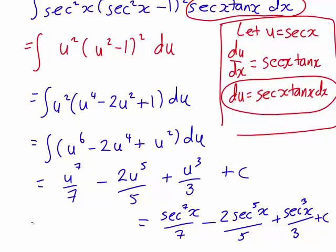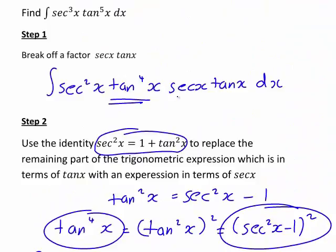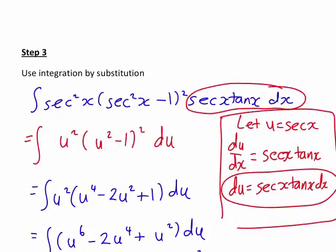Which was, in fact, what we were initially trying to work out. This is, in fact, the integral of sec³(x)tan⁵(x) with respect to x. So let's just briefly recap the process we used. We started off by breaking off a factor sec(x)tan(x). We then replaced everything else with sec(x) by using the identity sec²(x) = 1 + tan²(x). This then gave us an expression which was in terms of powers of sec(x) and then had this sec(x)tan(x) on the end, which allowed us to use substitution u = sec(x) in order to determine the value of our integral.